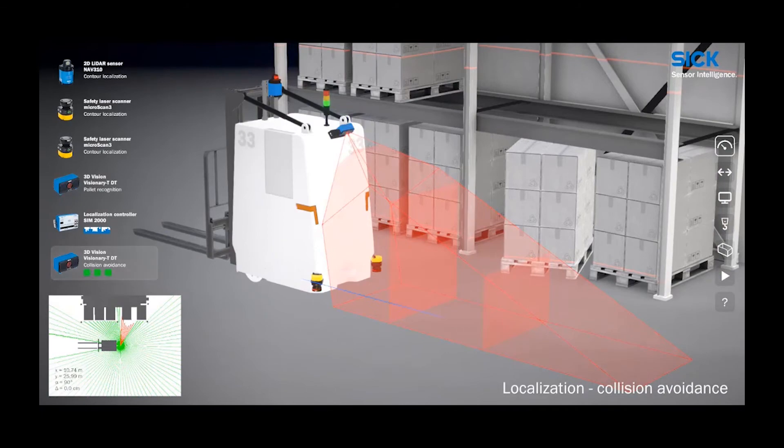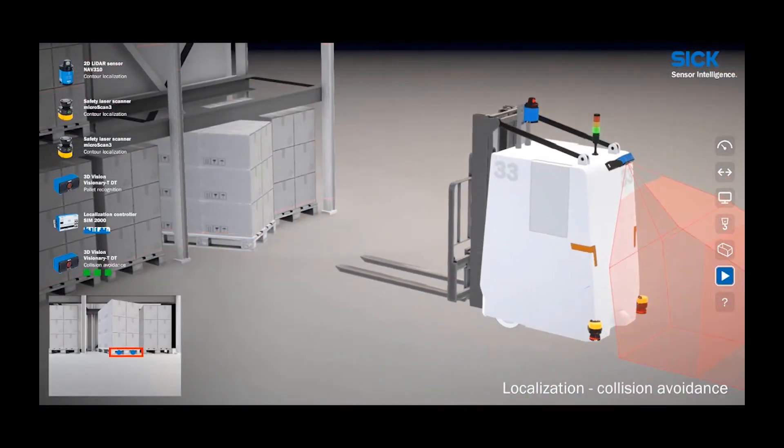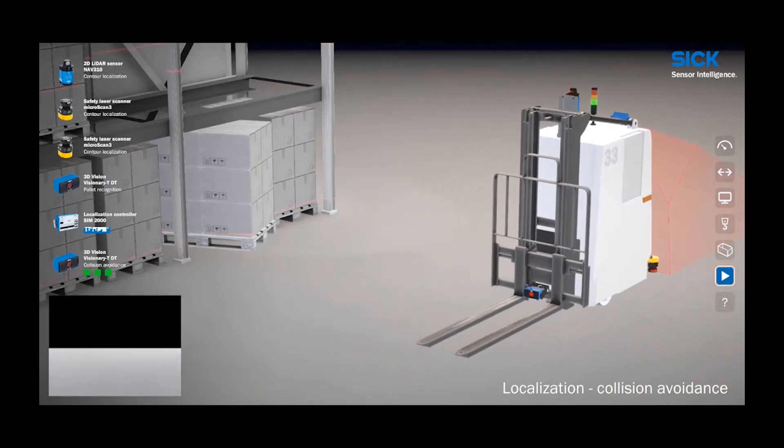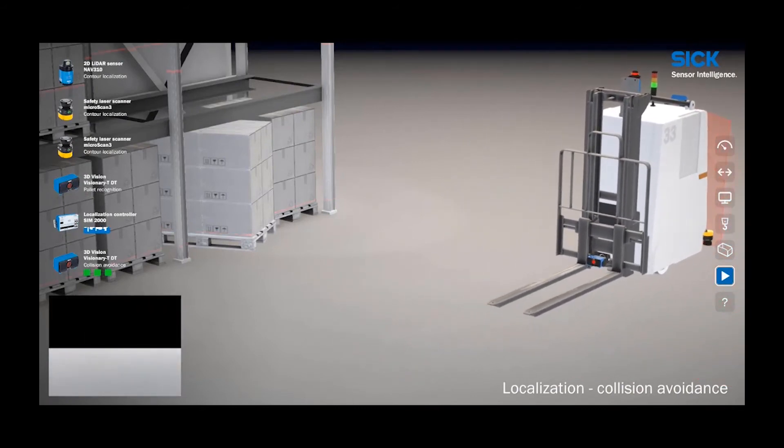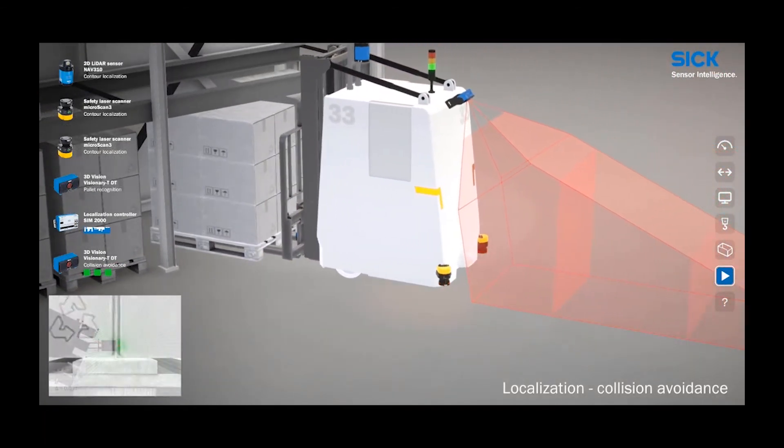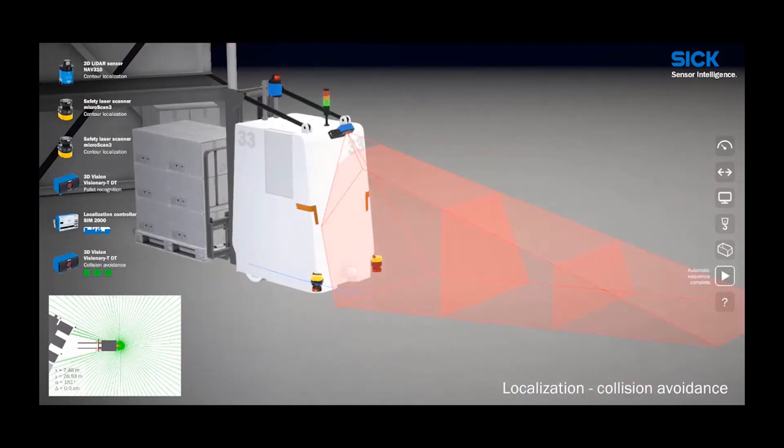Now that the vehicle has avoided collision, it continues its job of picking up a pallet. For this task, another Visionary 3D camera is employed, this time to locate the pallet and the fork pockets in the pallet. The coordinates of the pocket are sent to the vehicle's control system to precisely position the forks for pickup.